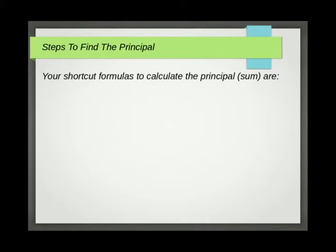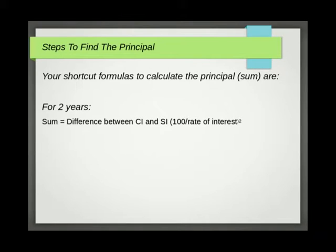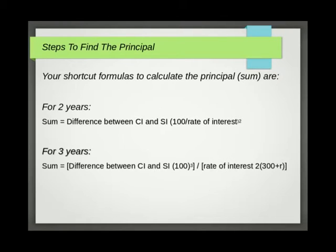Steps to find the principal: Your shortcut formulas to calculate the principal (sum) are: If difference between CI and SI is given for two years, then your formula will be Sum = Difference between CI and SI × (100/rate of interest)².